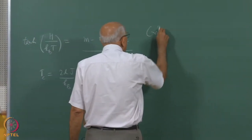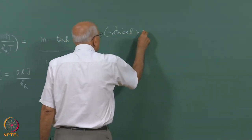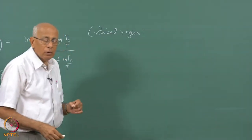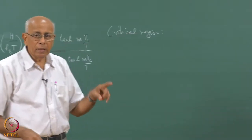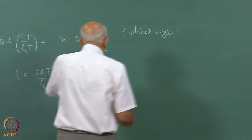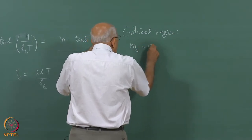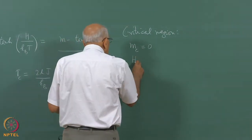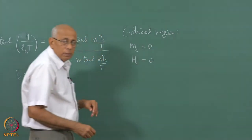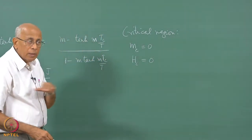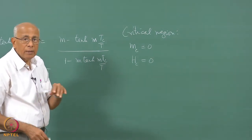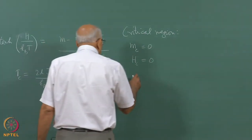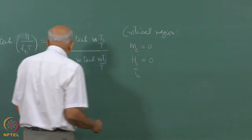In the critical region, the critical values analogous to P_c, V_c and T_c are: M_critical equals 0, because it takes off from 0 from the paramagnetic phase. H_c is also 0, because H=0 corresponded to a flat line ending in a critical point in the H versus T plane. And of course T_c is non-zero.